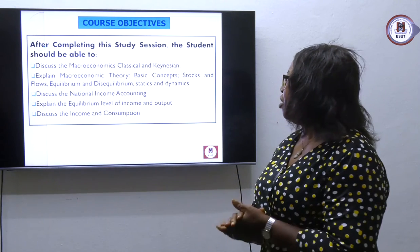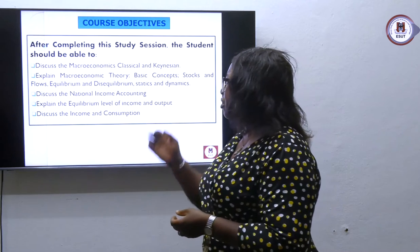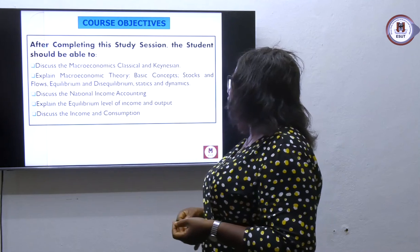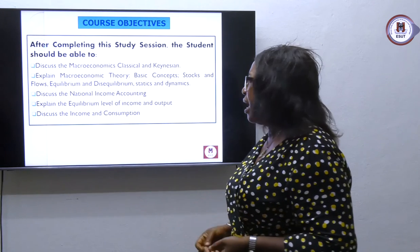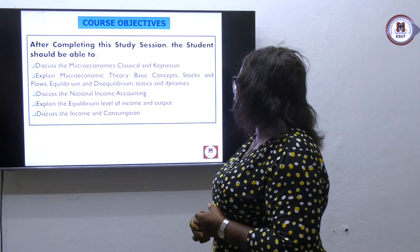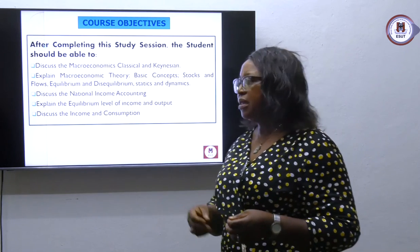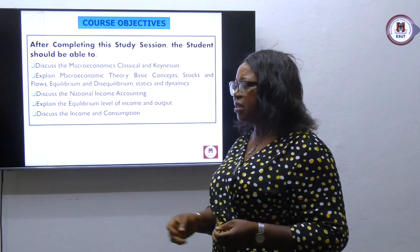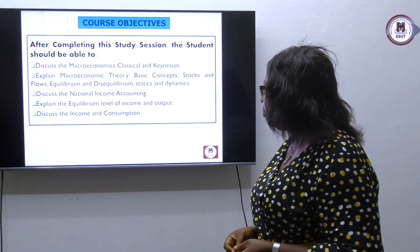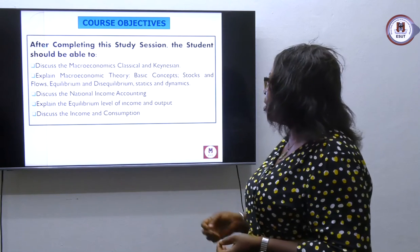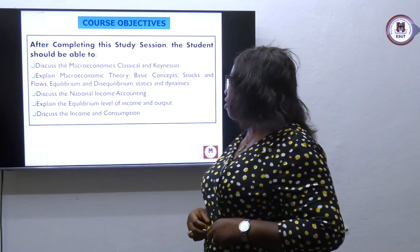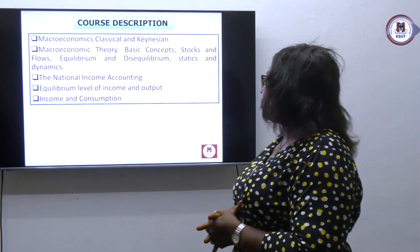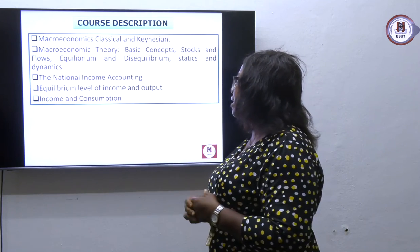Then we need to go into the theories. The key objectives we need to discuss in macroeconomics regard the classical and the Keynesian — their thoughts and ideas about the subject. We explain macroeconomics concepts here: the concept of stock and flow, the concept of static and dynamic, the concept of equilibrium and disequilibrium. We discuss national income accounting, equilibrium level of income and output, and also income and consumption.